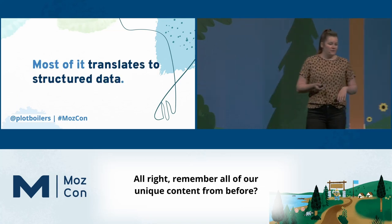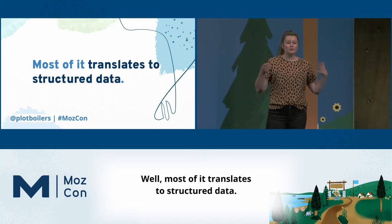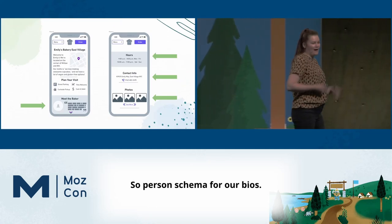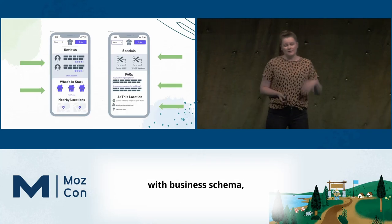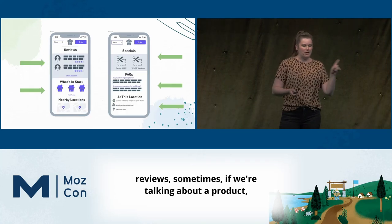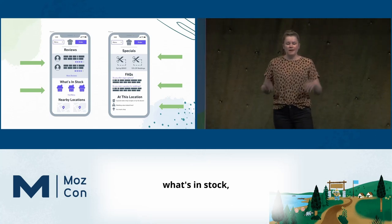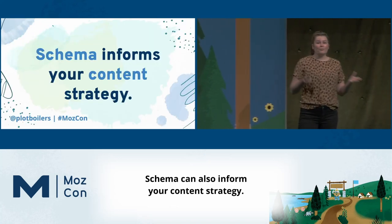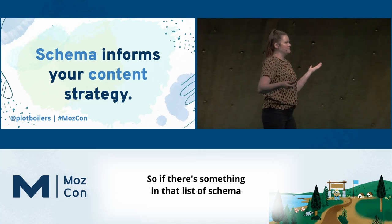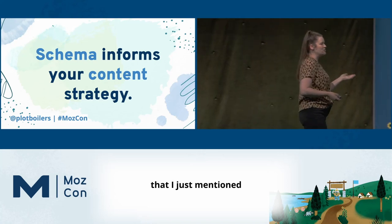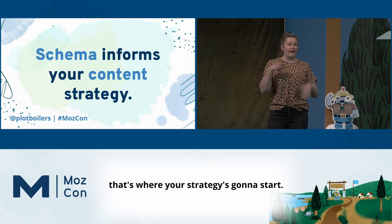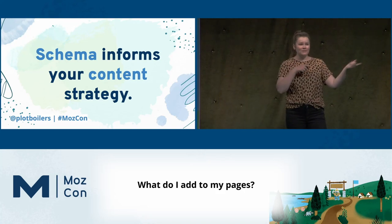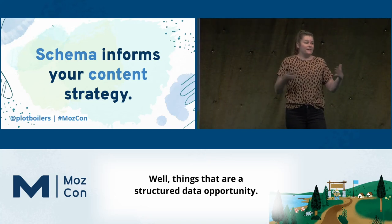Remember all of our unique content from before? Most of it translates to structured data. For example: person schema for staff bios, markup for photos, NAP information with business schema, reviews if you're talking about a product, inventory for what's in stock, offers for discounts and specials, and FAQ schema. Schema can also inform your content strategy — if there's something in that list that you don't have content to accommodate, that's where your strategy starts. You can use schema opportunities as a way to build your content strategy.